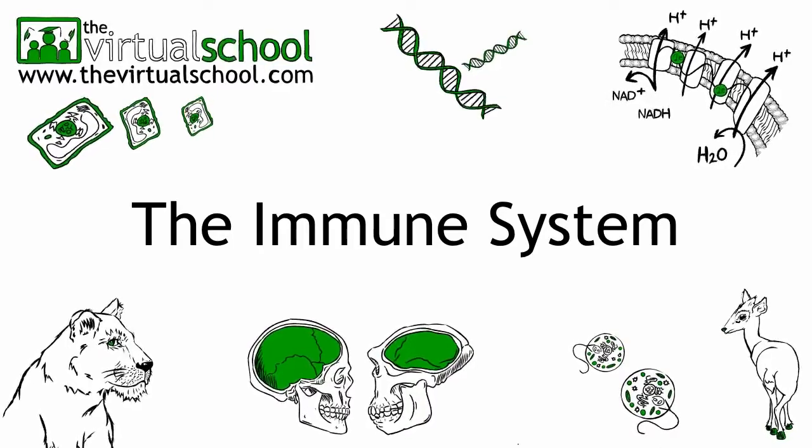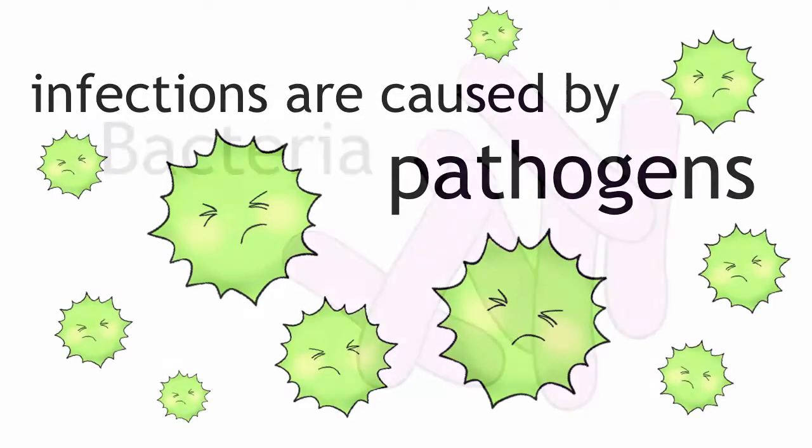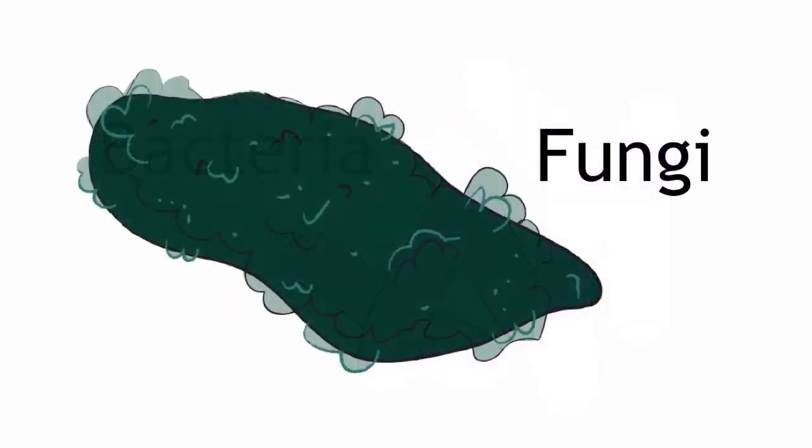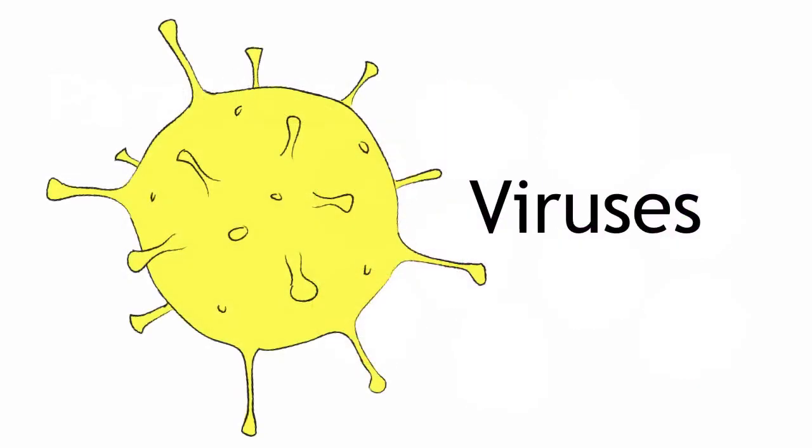The main function of the immune system is to prevent the development of disease caused by infection. Infections can be caused by a wide variety of pathogens including bacteria, fungi, parasites such as malaria, and viruses including influenza and the common cold.